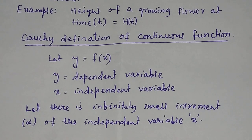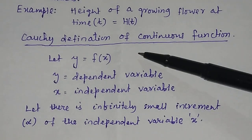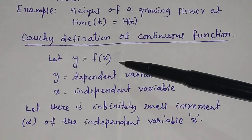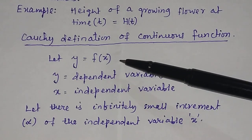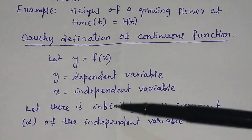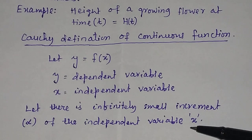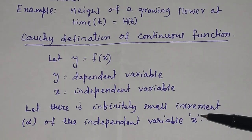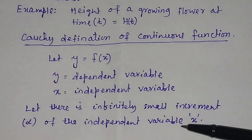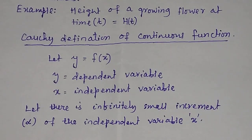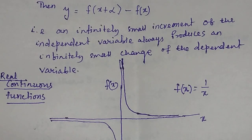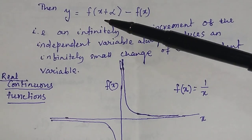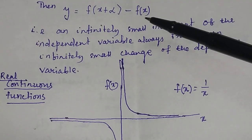Cauchy's definition of a continuous function. Suppose y equals f(x), where y is called the dependent variable and x is called the independent variable. Let there be an infinitely small increment alpha of the independent variable x. So, how will the dependent variable change?